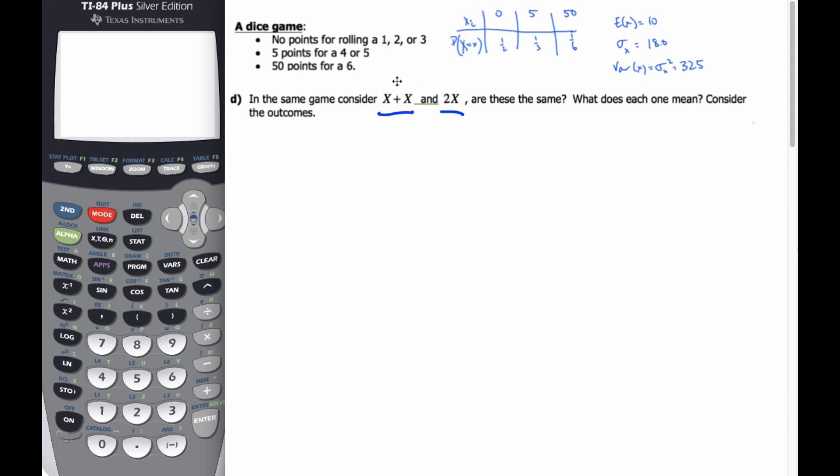Well, what X plus X means is I play the game twice, versus 2X means I double my point scores. So 2X simply means I take all these scores and I make them times 2, times 2, and times 2, and it keeps the same probabilities attached to them. And so here are my outcomes. I've doubled the point value.